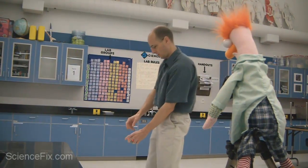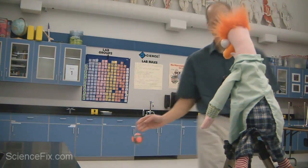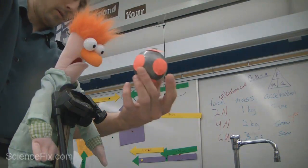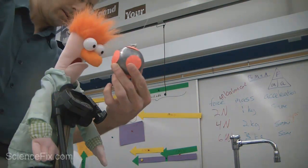Here we have a pendulum. It's a big, huge lead fishing weight on fishing line, and we're going to pull it up to Beaker and have it touch the nose of Beaker.